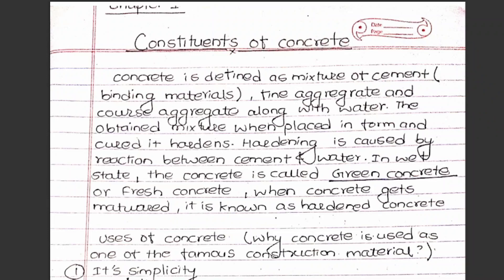First, concrete is defined as a mixture of cement, fine aggregate, and coarse aggregate along with water. Cement is the binding material. Concrete is defined as a mixture of cement, coarse aggregate, and water.